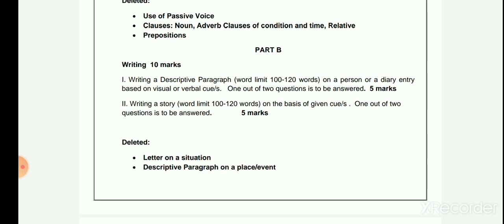In the Writing section, for 5 marks, a descriptive paragraph on a person or a diary entry may be asked — only one out of two options is to be answered. The second question is story writing with a word limit of 100 to 120 words, based on given clues.